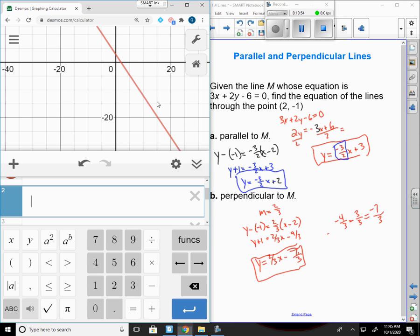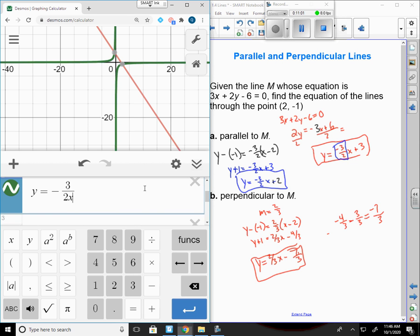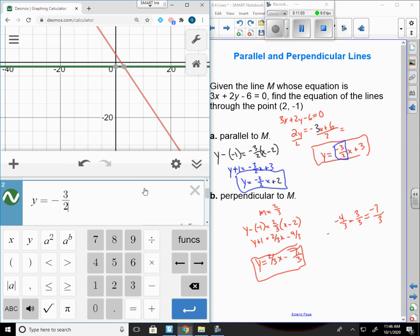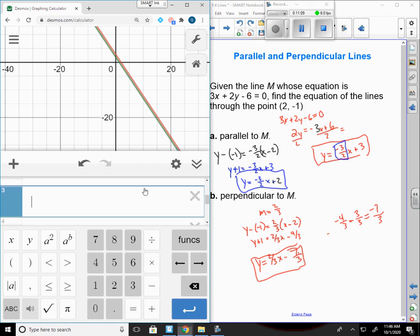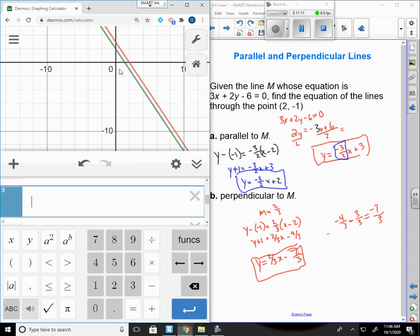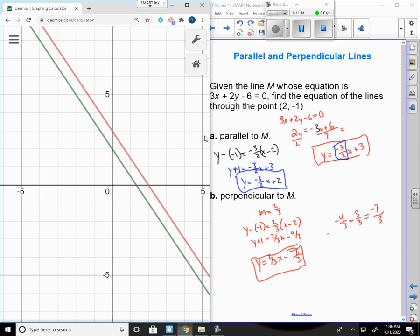That's my original line. Now let's check my parallel equation. y equals negative 3 halves x plus 2. If I look at this graph, they're running side by side.